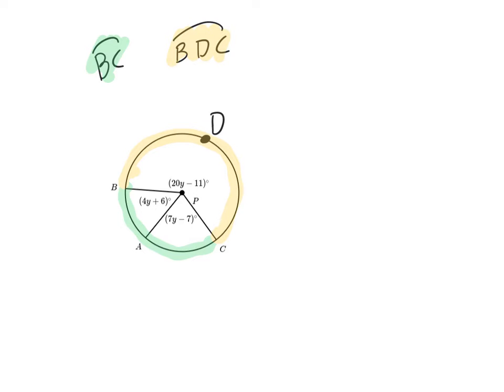The way you could solve this is you know that a circle all of them have to add up to 360 degrees. So you could just say that 20y minus 11 plus 4y plus 6 plus 7y minus 7 has to add up to 360 degrees.